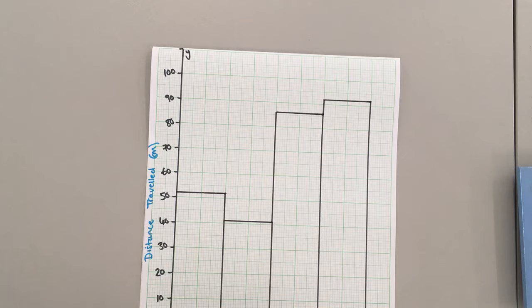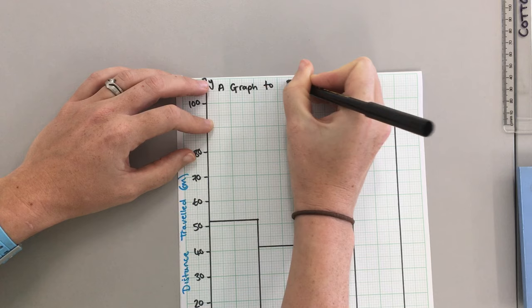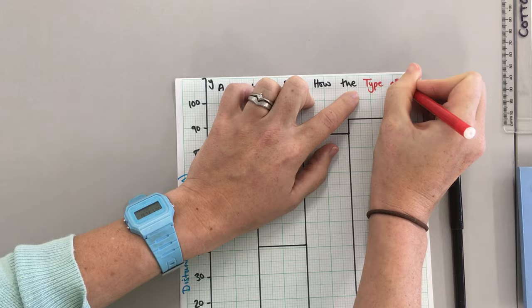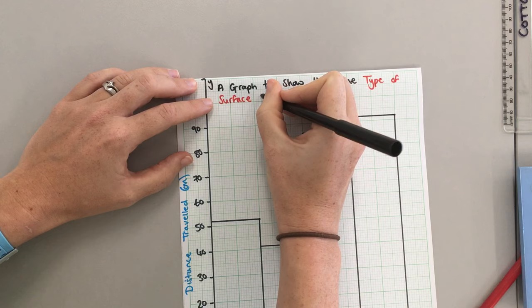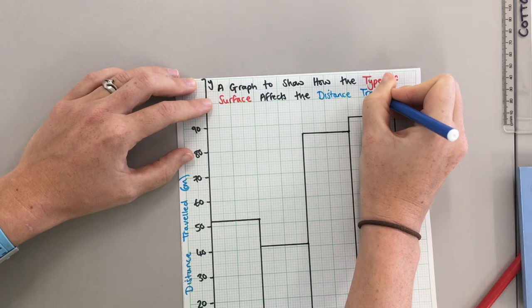Looks like laminate allows the furthest distance travelled. Now all this graph needs is an appropriate title. So, a graph to show how the independent variable, which is type of surface, affects the distance travelled, the dependent variable.